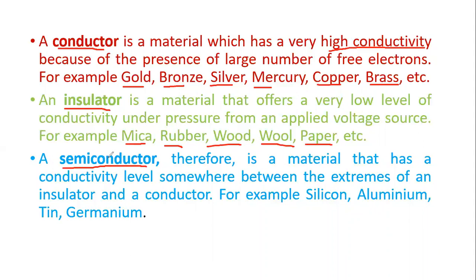A semiconductor is a material that has a conductivity level somewhere between the extremes of insulator and conductor — not very low, not very high, but in the middle. 'Semi' means partial or half, and 'conductor' means it has the property of a conductor. So if it has partial property of a conductor, that is called a semiconductor.